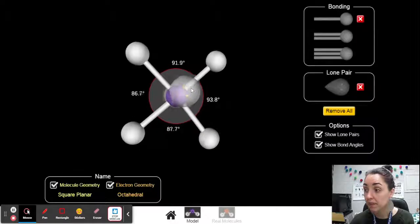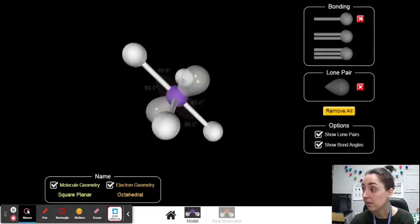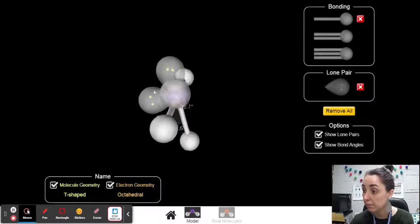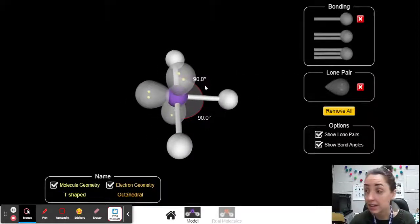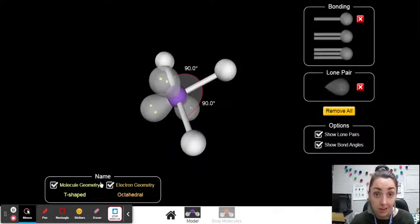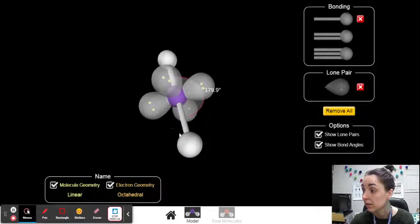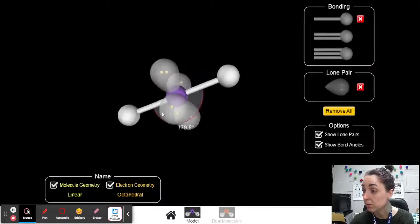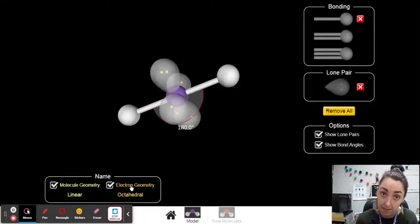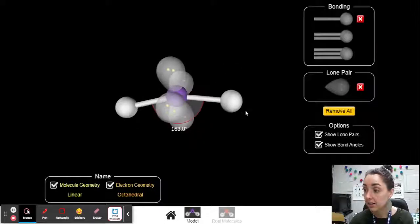So a square planar tells me I've got four bonded atoms and two lone pairs. Again, I can ditch another bond, add another lone pair, and still octahedral, but now my molecule geometry is T-shaped. Ditch another bond, add another lone pair, still octahedral electron geometry. I've still got six electron domains, but now my molecule geometry is linear because I only have two bonded pairs. So I have a linear molecule geometry.